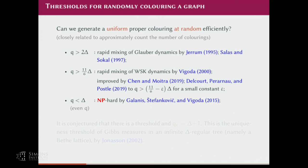On the other hand, we have NP-hardness if Q is less than delta, due to Galanis, Stefankovic, and Vigoda. For some technical reasons this only works for even Q, but you don't really expect all Q to behave differently.